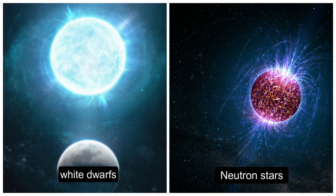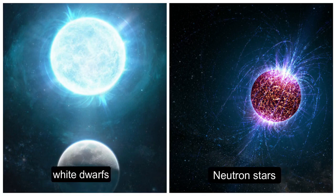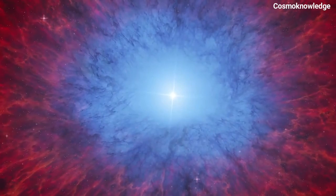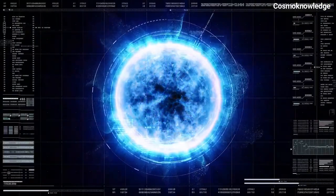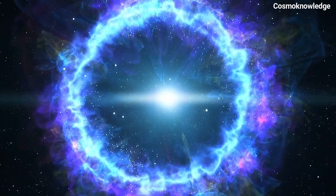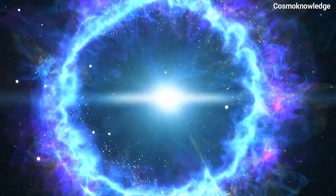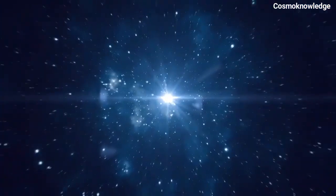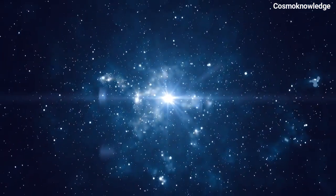When our Sun runs out of fuel, it will collapse into a white dwarf in about 5 billion years. However, if the star's mass is large enough, at least three times that of our Sun, it will continue to collapse theoretically into an infinitely small object with a finite mass, but infinite density known as a singularity. The gravitational pull of this object is so strong that nothing, not even light, can escape. That's why it looks black, and it's called a black hole.